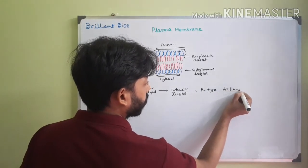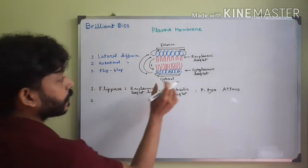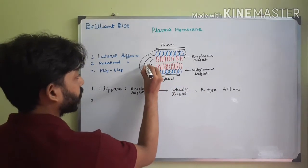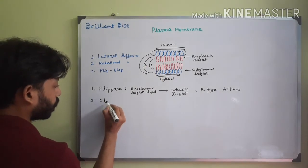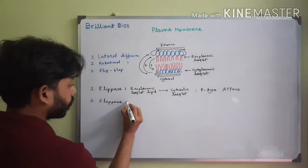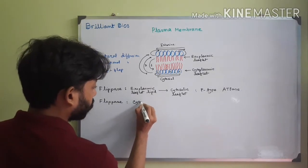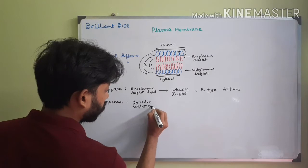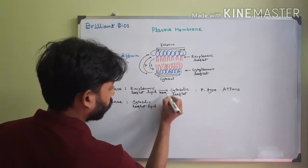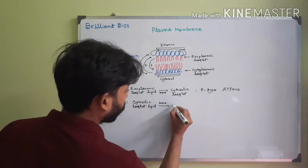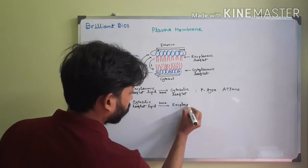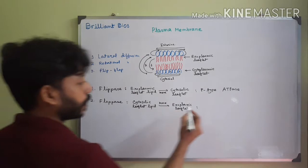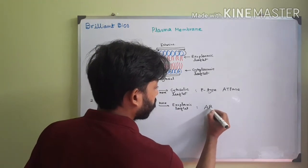The second type of movement — the movement of lipid molecules from the cytosolic leaflet to the exoplasmic leaflet — is performed by another protein called floppase. So floppase moves lipid from the cytosolic leaflet to the exoplasmic leaflet. This floppase protein is actually an ABC transporter.